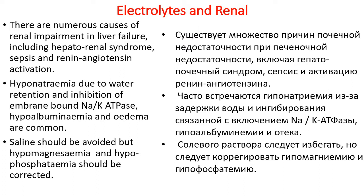Electrolytes and renal. There are numerous causes of electrolyte impairment in liver failure, including hepatorenal syndrome, sepsis, and renal angiotensin activation. Hypernatremia due to water retention and inhibition of natriuretic peptides, hypoalbuminemia, and edema are common. Saline should be avoided, and hypomagnesemia and hypophosphatemia should be corrected.